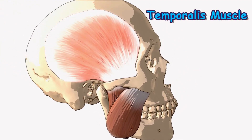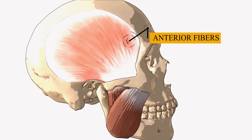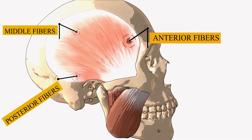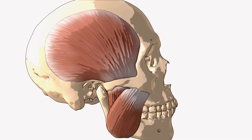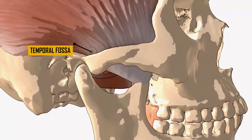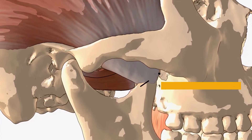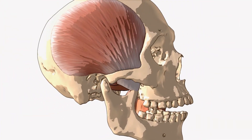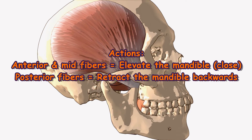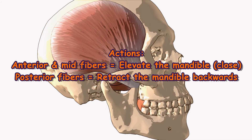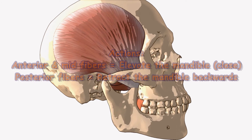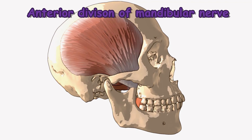The temporalis is a fan-shaped muscle consisting of anterior fibers with a vertical orientation, mid fibers with an oblique orientation, and posterior fibers with more of a horizontal orientation. It originates from the temporal fossa and condenses into a tendon which inserts onto the coronoid process of the mandible. Anterior and mid fibers elevate the mandible, closing the mouth. Posterior fibers retract the mandible, pulling the jaw posteriorly. Innervation is by the anterior division of the mandibular nerve.